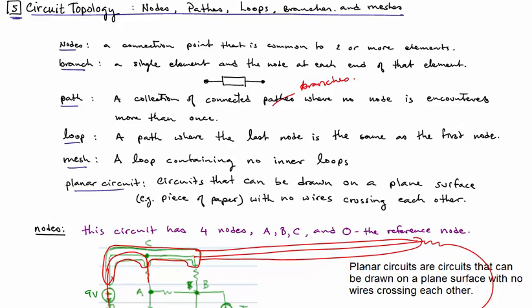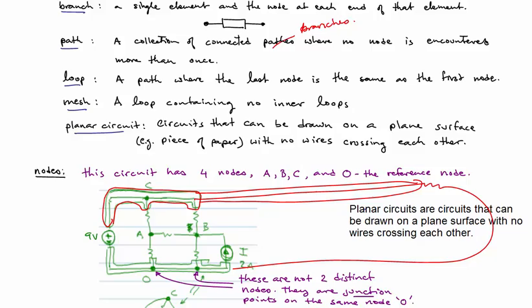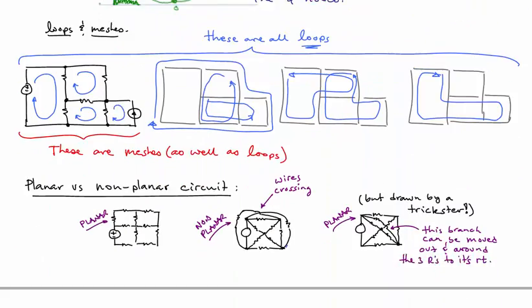Or this element, that element, and that element. Those are all paths. A loop, then, is a path where the last node is the same as the first node. So in other words, we have a closed path. And a mesh is a loop that contains no inner loops. So let's look at some examples here.